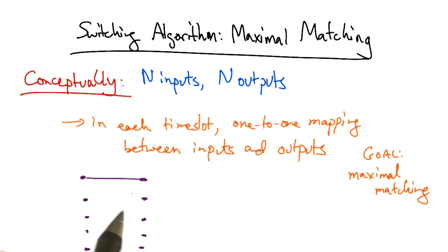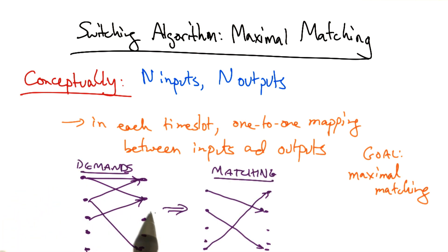So in a particular time slot, we might have a certain set of traffic demands at certain input ports that is destined for certain output ports. And our goal is given these demands to produce a matching that is maximal and fair.